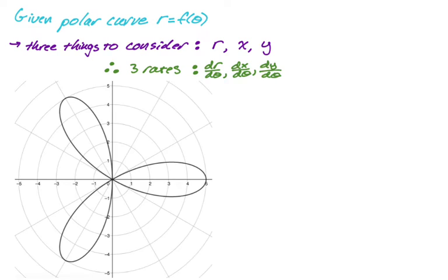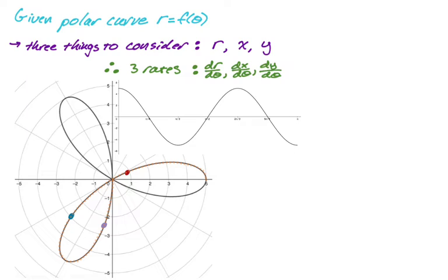We're going to look at an example graphically, finding three points on this curve and describing what's happening at those points. I'm assuming you know how to graph polar — if not, I have videos on that. For this particular curve, we start on the positive X axis. I'm also adding in little vectors that show the direction you're traveling — that's really the tangent vector, showing the direction you'd continue if you fell off the curve.